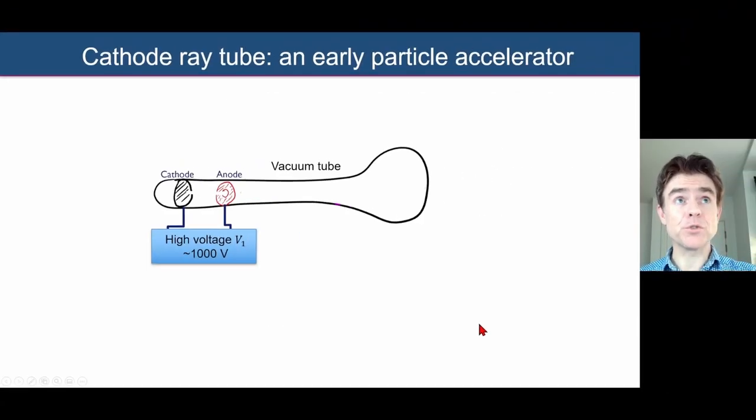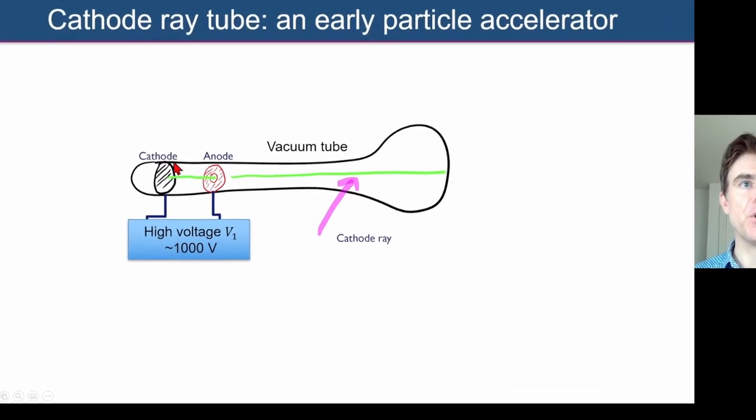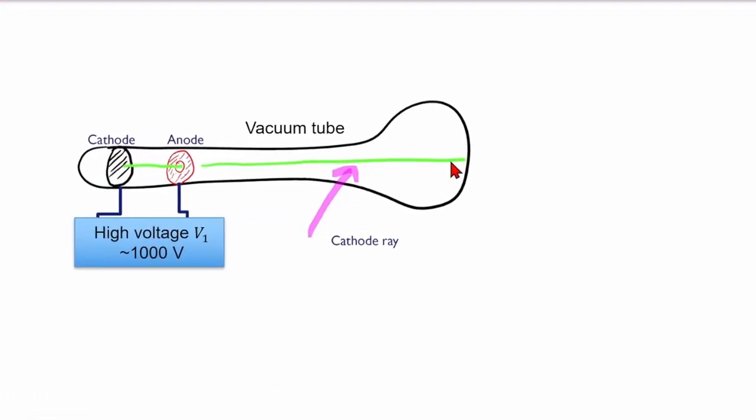For now, then, we're going to focus on the cathode ray tube, a very early particle accelerator. What we have then is a piece of glassware, and we have two electrodes with a high voltage placed between them. We have a negatively charged cathode, a positively charged anode. And this glass, this vacuum tube, is nearly evacuated of all air, but there's still some air left in there, which is actually quite important for the experiment to work. And what happens is, with the application of this high voltage, we get this so-called cathode ray. It's called a cathode ray because it emanates from the cathode, from the negative electrode.